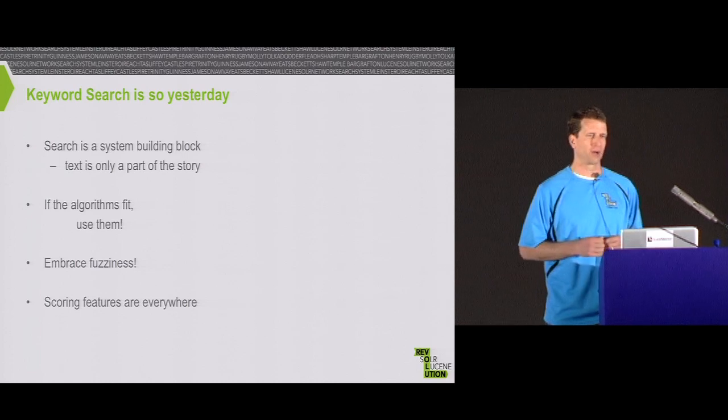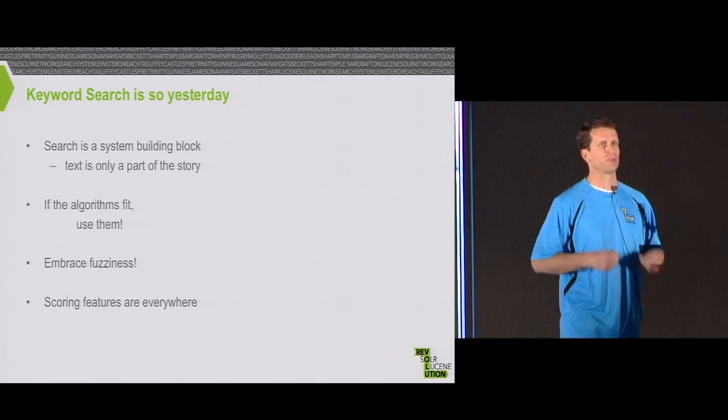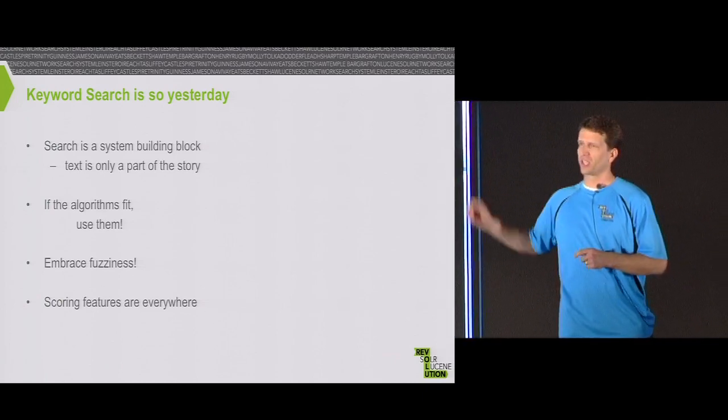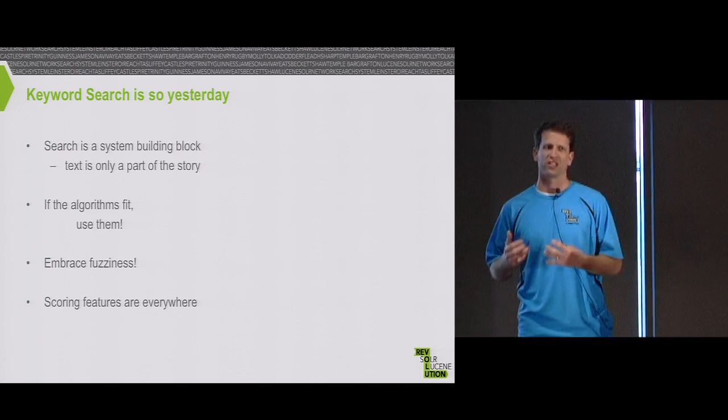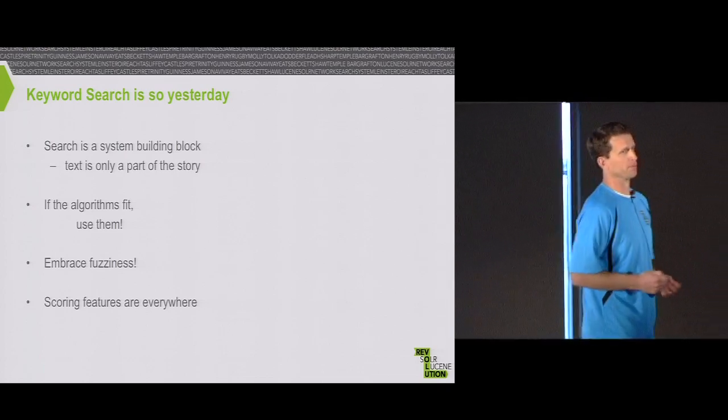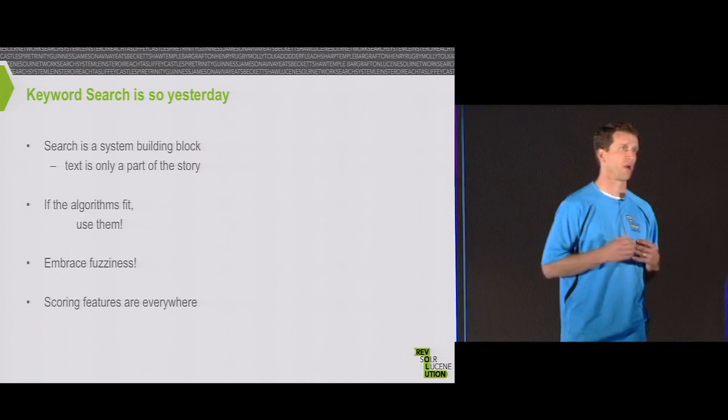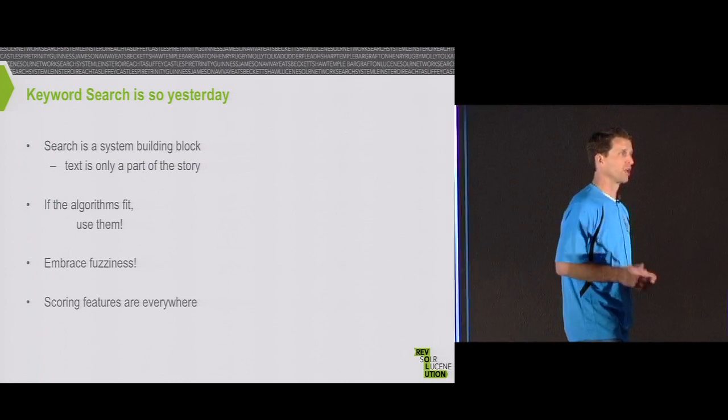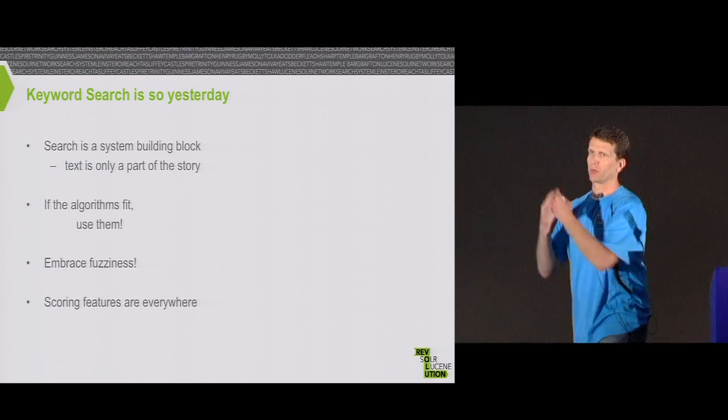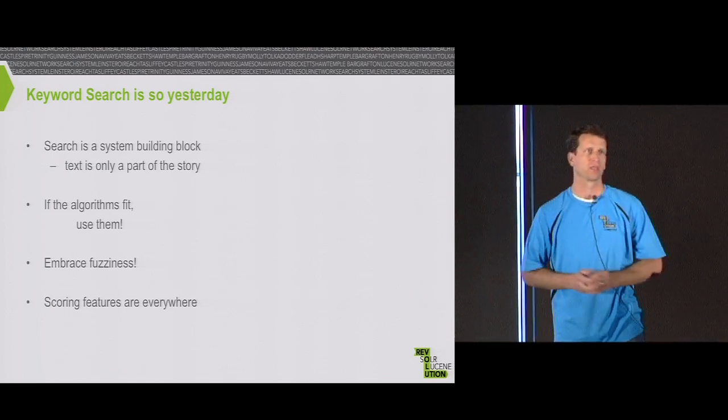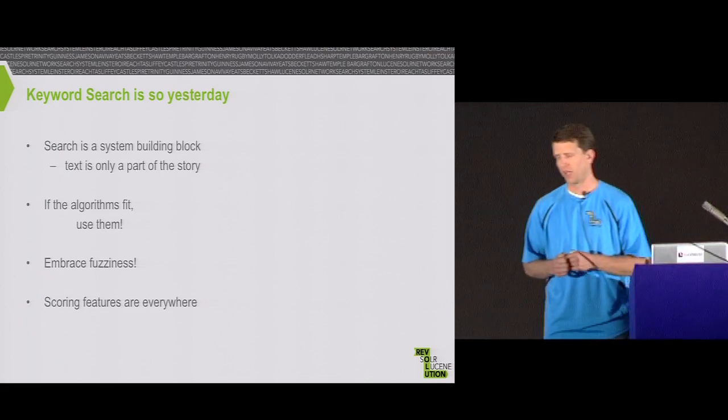How many people here have a computer science degree? What are the two main classes you took that was rammed home to you every day? Data structures and algorithms. You're a computer scientist - use the right data structure, use the right algorithm. I would put forth that search has some really interesting data structures and really interesting algorithms, and if you use those things in interesting ways beyond just doing free text search, you can solve some other problems that maybe you hadn't thought about.